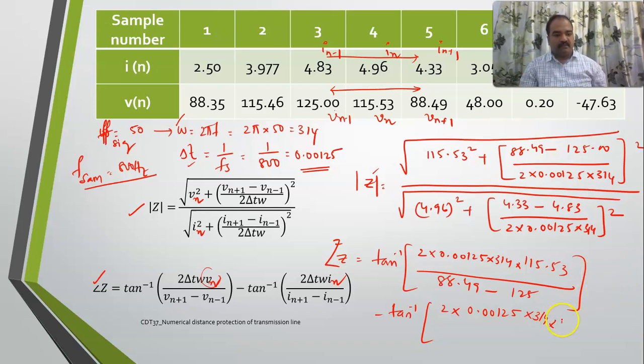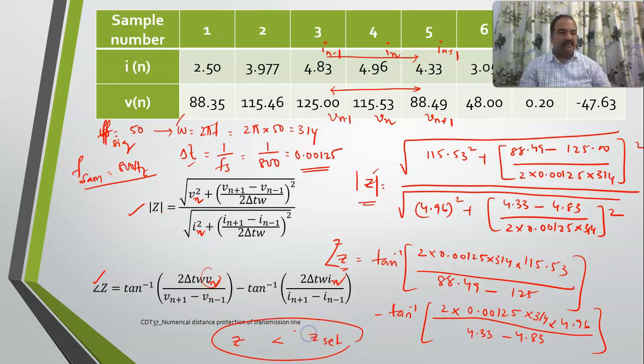This is mod z. Once you have these, you can calculate the z value and compare it with the setting value. If it is okay then it is okay, if it is not then you will give the trip signal.